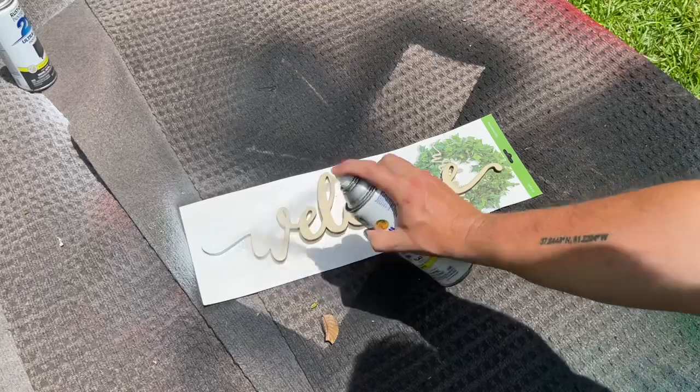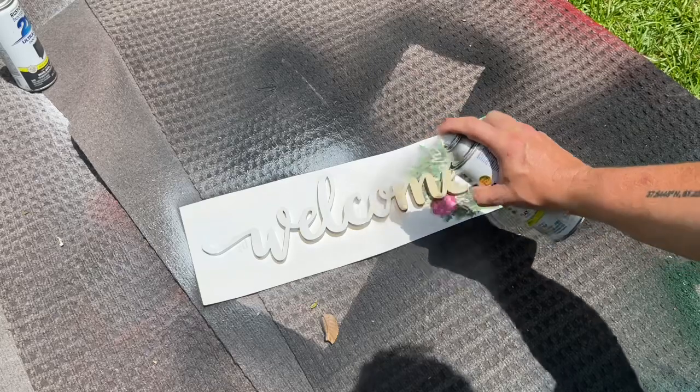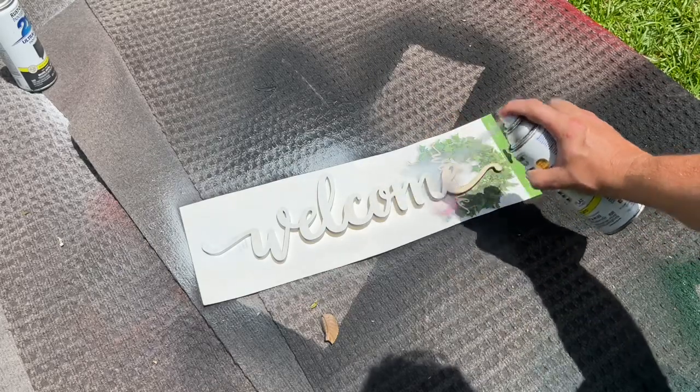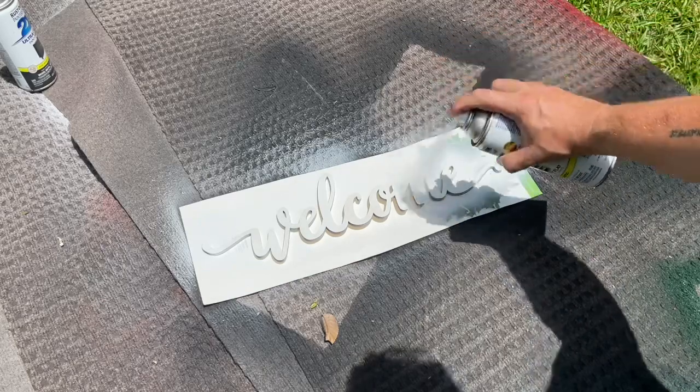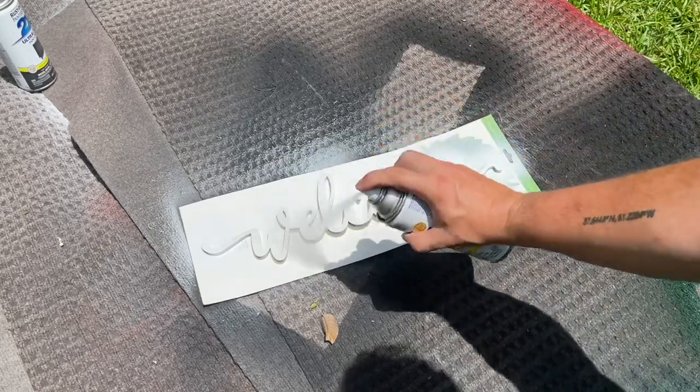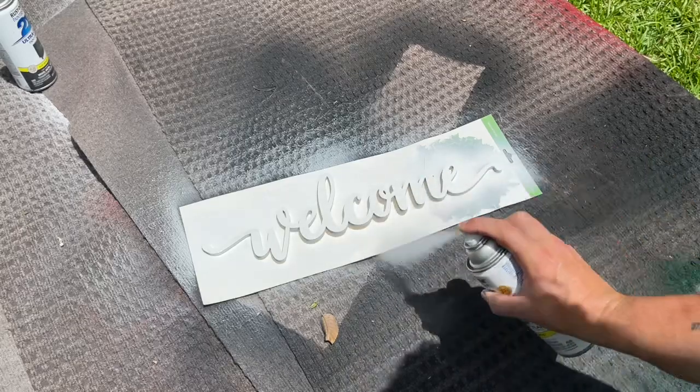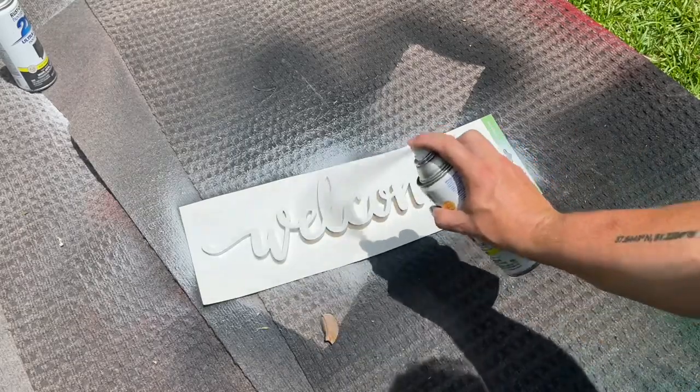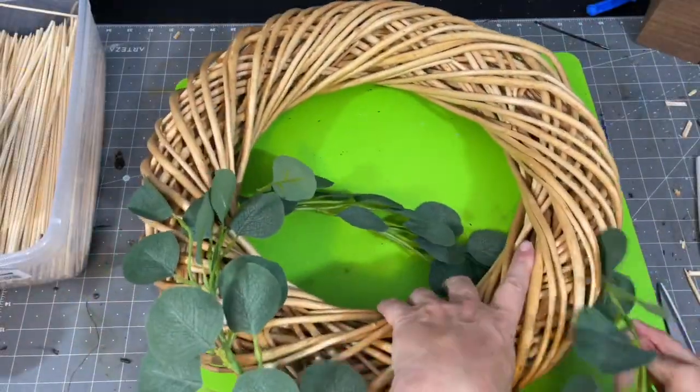The first thing I'm going to do is take my welcome sign outside and I'm going to spray paint it white. I did take it off of that backing that it comes with but I just used that to put it on there while I was doing the spray painting. I'm using a flat white matte paint from Rust-Oleum. I use this a lot and I really like the coverage, and I'm just making sure that I'm getting in and around everything.